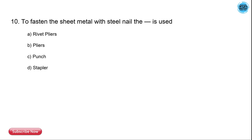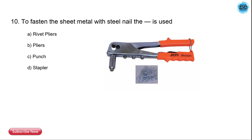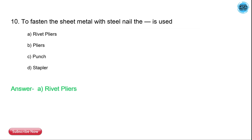The 10th question is: to fasten the sheet metal with the steel nail, what is used? The correct answer is rivet pillar — we use a rivet pillar to fasten the sheet metal with the steel nail.